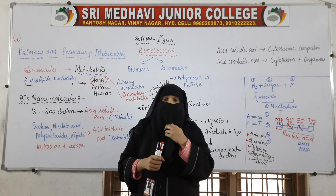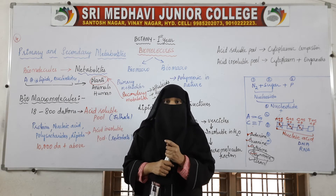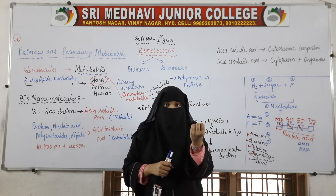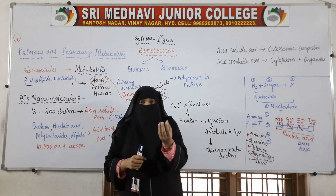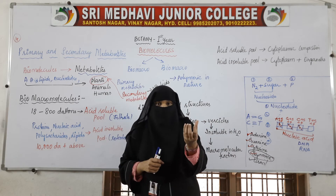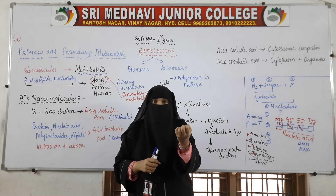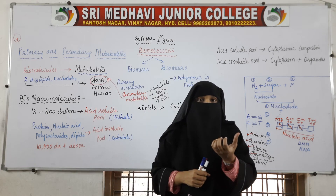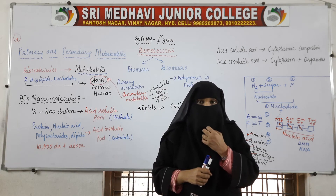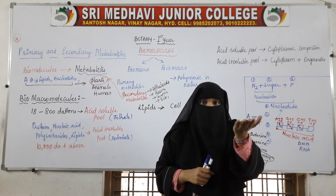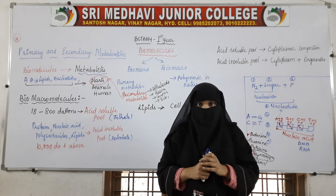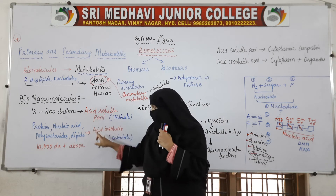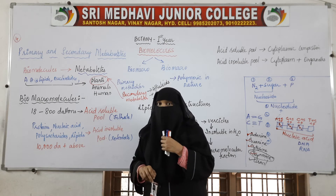Coming to chemical analysis: in the very first video we saw that when we grind a substance such as a leaf or liver in trichloroacetic acid, we obtain a filtrate and a retentate. The filtrate is called the acid-soluble pool and the retentate is called the acid-insoluble pool.